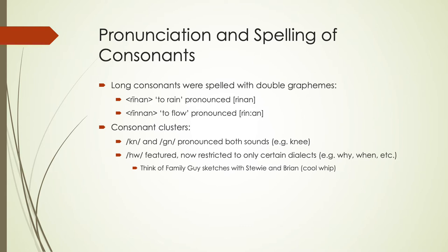The 'wha' sound is a voiceless W, represented in the IPA with an upside-down W. So instead of saying 'why,' you'd say something like 'hwhy.' You can think of Family Guy sketches between Stewie and Brian — the 'cool whip' kind of joke is sort of making fun at this voiceless version. This was a sound we did still find in Old English. Now we only really find it in a couple of dialects, usually older or extremely wealthy dialects — New England being one place, which is also why it appears in those Family Guy sketches.